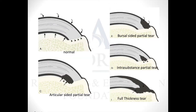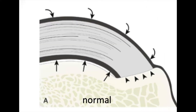When we see the different grading of rotator cuff tears, we have articular-sided, bursal-sided, intra-substance, and full-thickness rotator cuff tears.